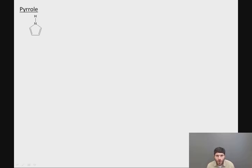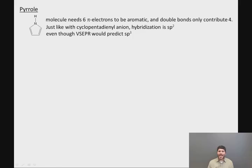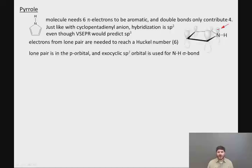Next we want to look at pyrrole. This is now a five-membered ring instead of a six-membered ring, still containing one nitrogen, but there are only two double bonds in the ring. The nitrogen is not participating in either of those two double bonds. This molecule needs six electrons to be aromatic, and the double bonds only contribute four. Just like with the cyclopentadienyl anion, the hybridization at the nitrogen can be sp2, even though VSEPR would predict sp3, and we can put the lone pair electrons into the p orbital because we need those electrons to reach the Huckel number of six.